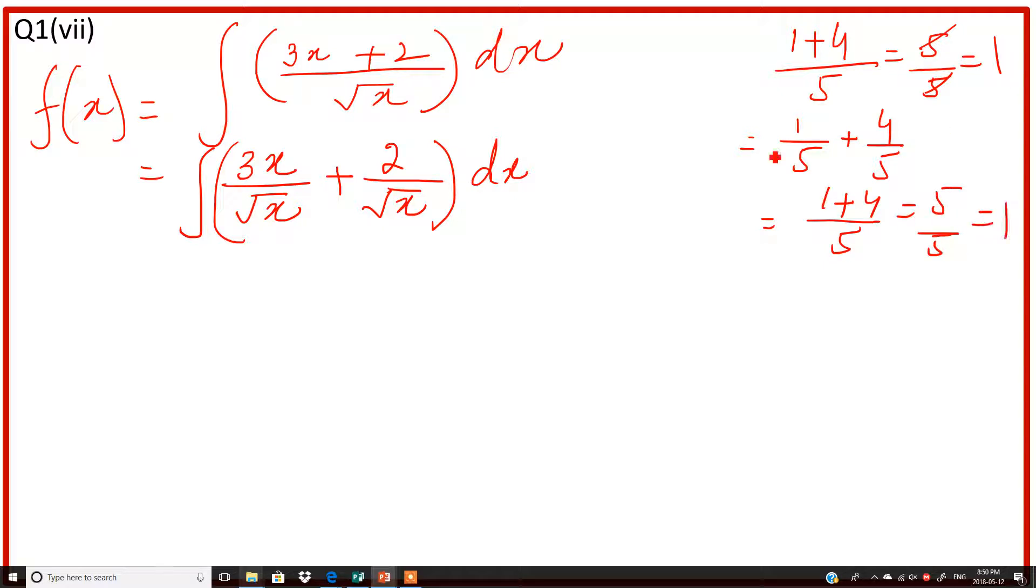So the same rule I'm going to apply here. This divided by 2 terms divided by under root x means you have to divide 3x by under root x plus 2 divided by under root x.